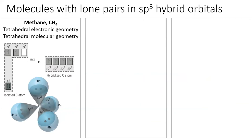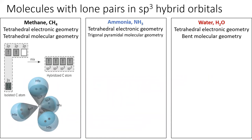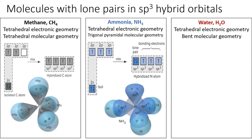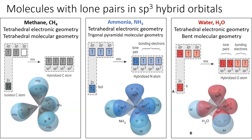Sigma bonds aren't the only things that use hybrid orbitals — lone pairs also live in hybrid orbitals. Comparing methane to ammonia and water: all three molecules are sp3 hybridized with tetrahedral electronic geometry. But in ammonia, one of the sp3 orbitals contains a lone pair, giving it a trigonal pyramidal molecular geometry. In water, two of the hybrid orbitals contain lone pairs, giving water a bent molecular geometry.